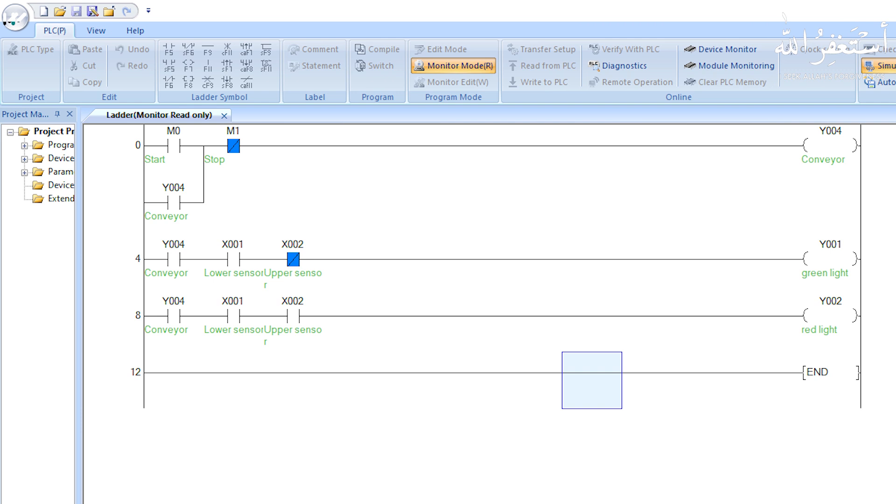Now let's see the PLC programming. In the first rung, we simply make a hold-on logic to start the conveyor motor Y4. Before discussing the second rung, we will discuss the third rung.